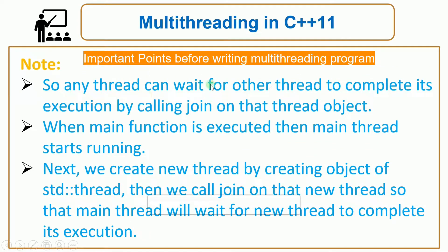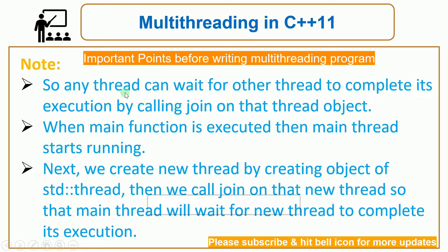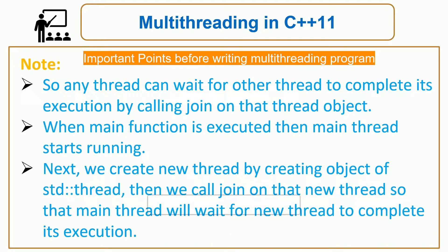When using threads, any thread can wait for another thread to complete its execution by calling join on that thread object. For example, if the main thread creates a new thread object, the new thread is created. If the main thread wants to wait for the new thread to complete its execution, the main thread calls the join function on that new thread object.